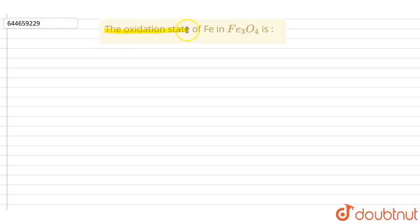The question is: what is the oxidation state of Fe in Fe₃O₄, that is iron oxide? Here is the answer.